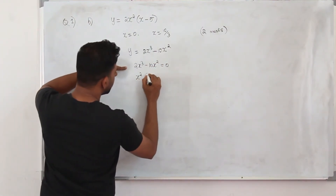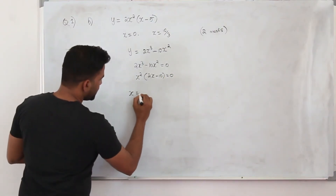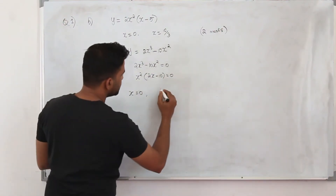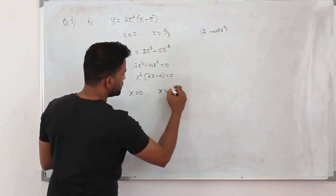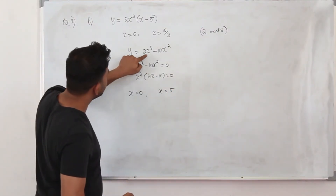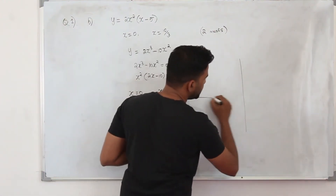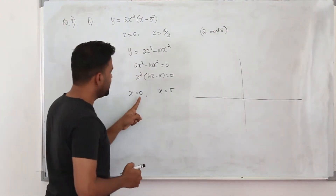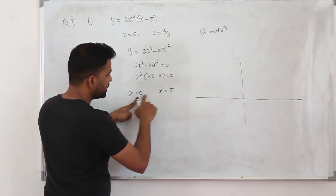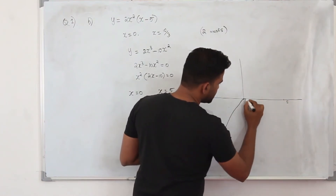Take x squared as a common factor: x squared times (2x minus 10) equals 0. Equating separately gives x equals 0 (a repeated root) and x equals 10/2, which is 5. The coefficient of x cubed is positive, so the graph touches the x-axis at 0 and passes through 5. The graph looks like a cubic with two turning points.